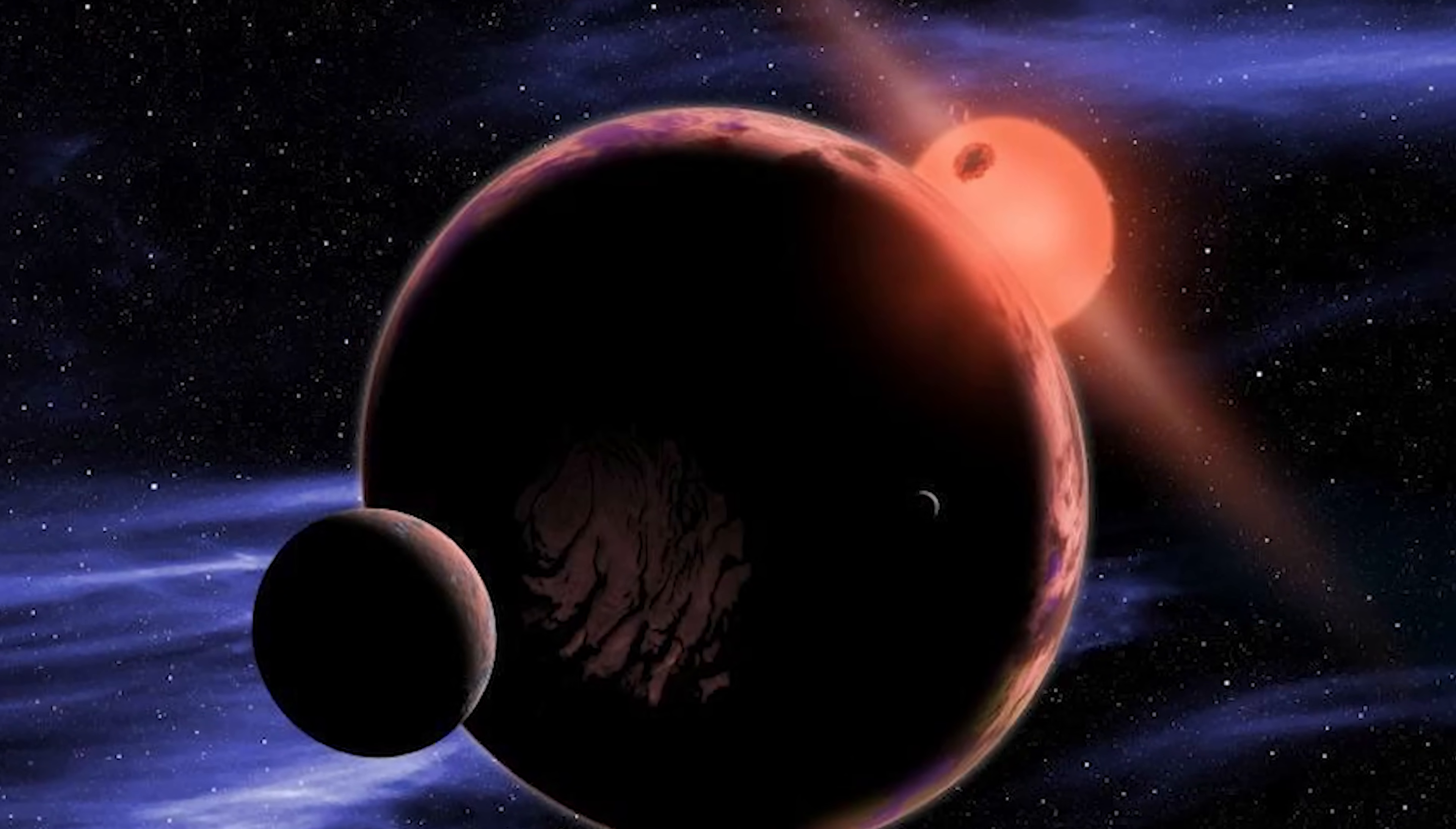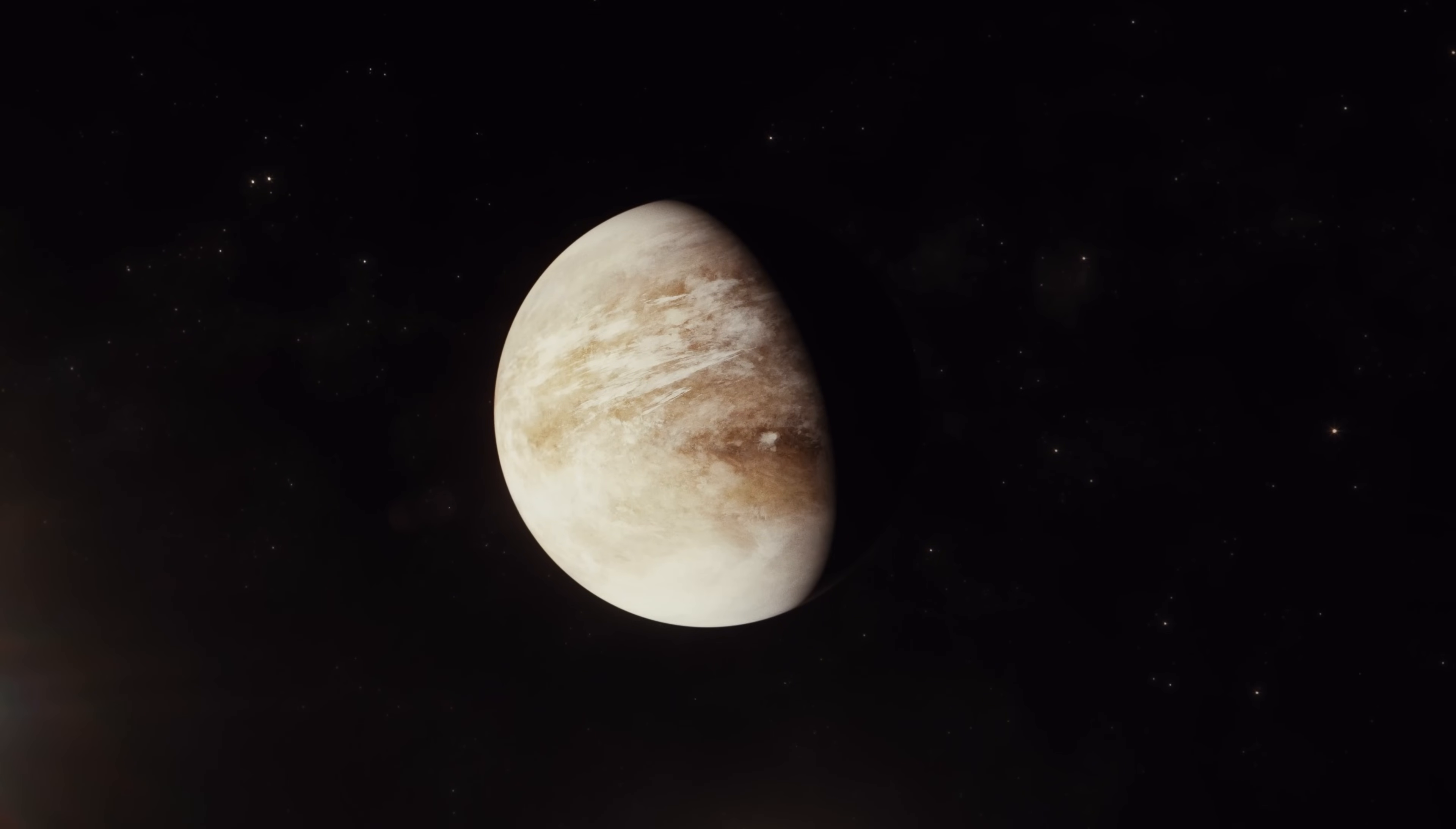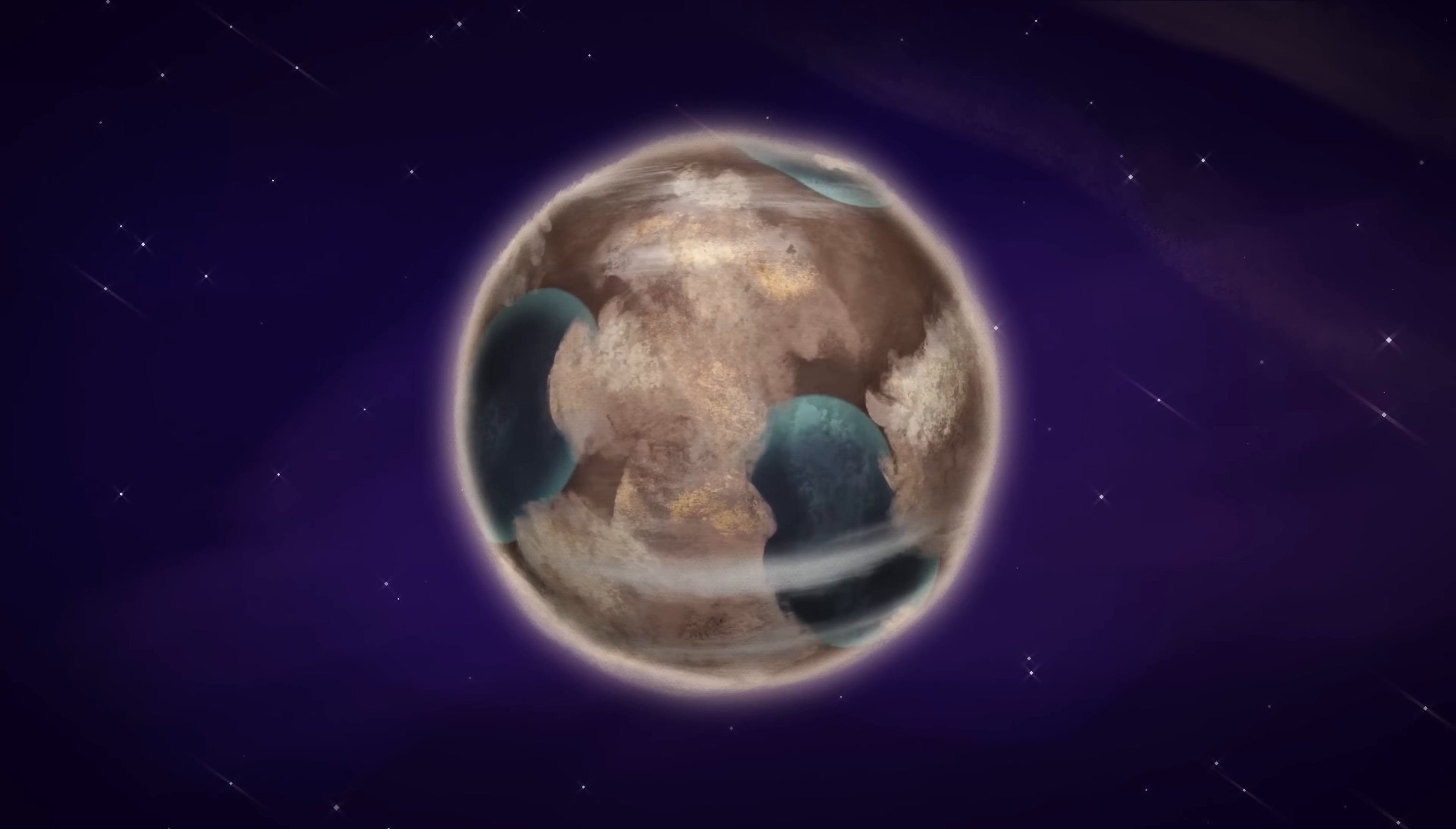Outside this temperate band, things go sideways fast. Too close to the star and the planet becomes a scorched wasteland. Water boils off into steam, molecules break apart, hydrogen escapes into space, and the remaining oxygen binds with carbon to form carbon dioxide. This runaway greenhouse effect is exactly what happened on Venus. Too far from the star and everything freezes. Oceans become glaciers and the surface turns into a planetary skating rink. While there might be some liquid water trapped deep beneath thick ice layers, such planets are generally poor candidates for habitation. So whether you're scouting for your future interstellar home or hoping to find signs of alien life, start your search in the habitable zone.